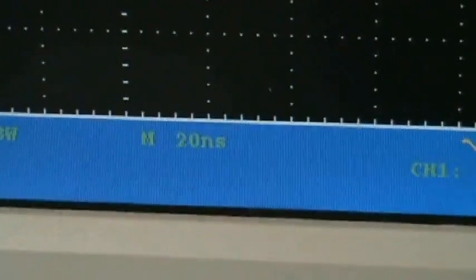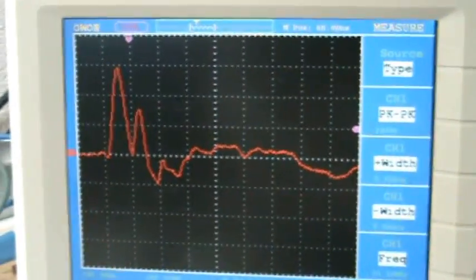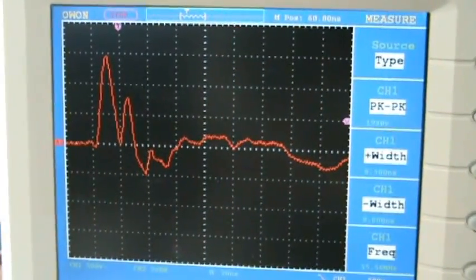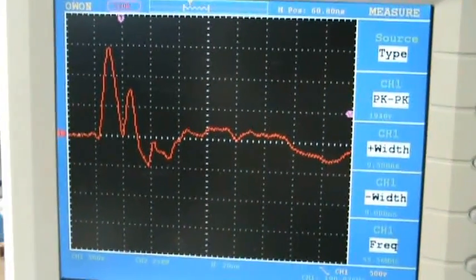We are at 20 nanosecond per division, so we have a very small pulse of almost 2kV there.